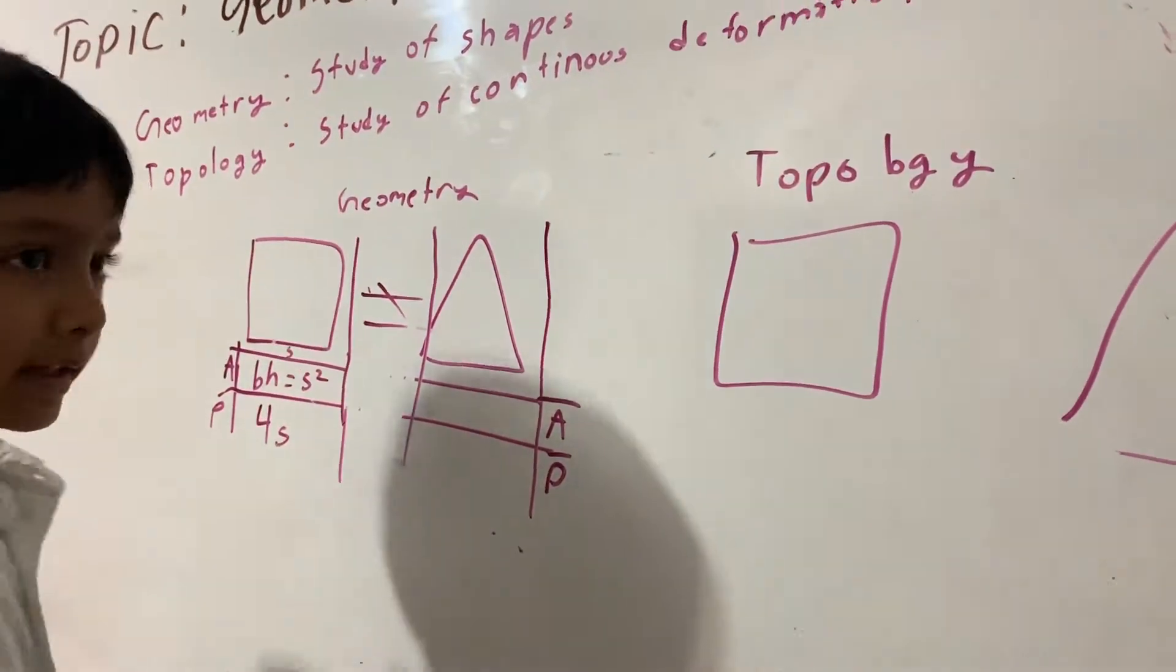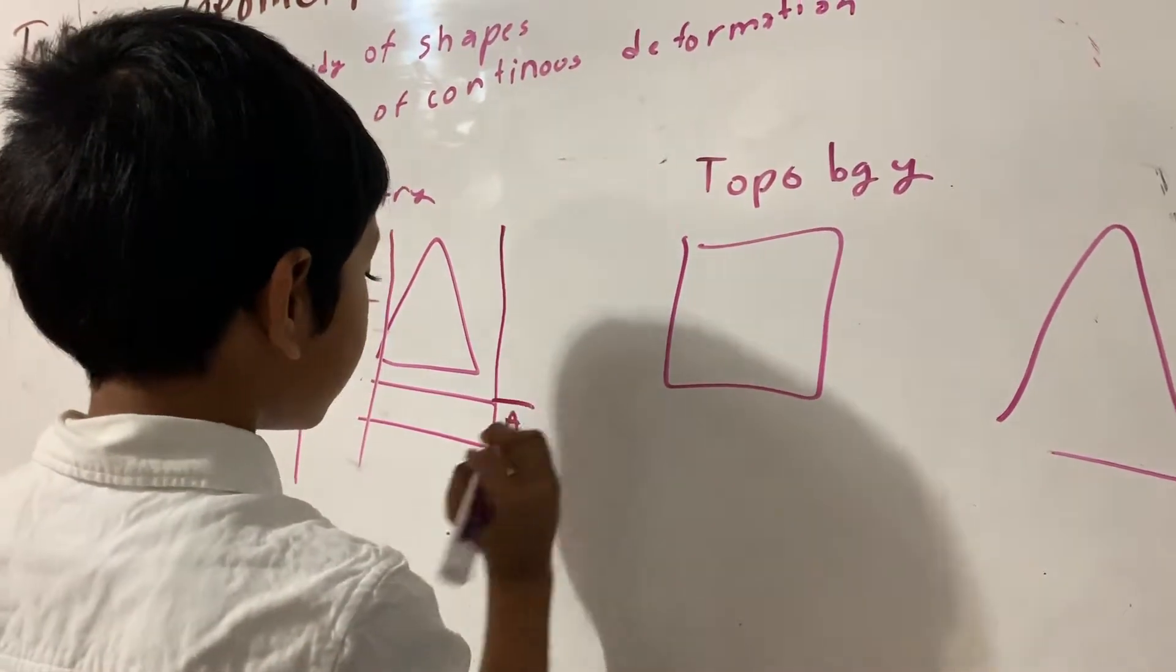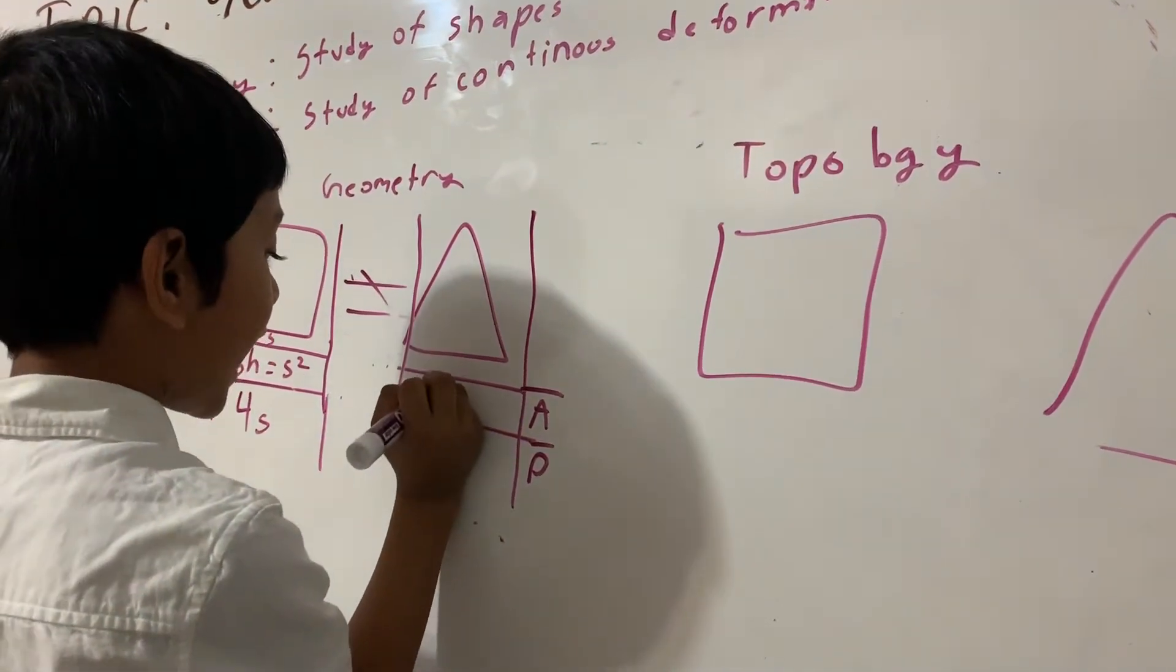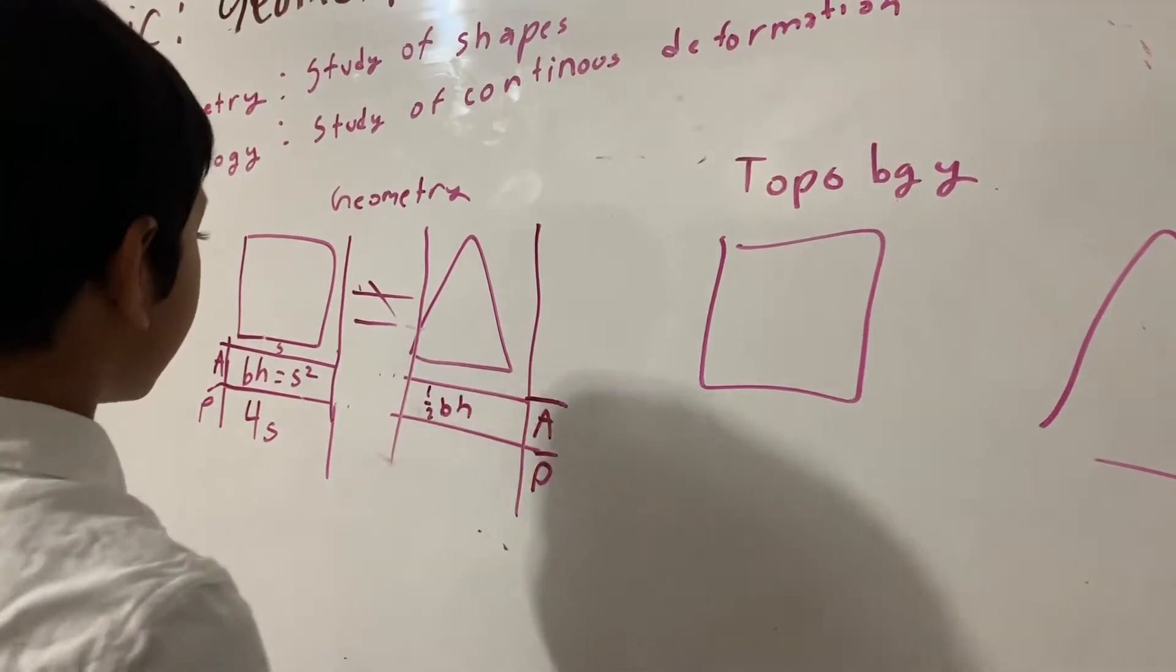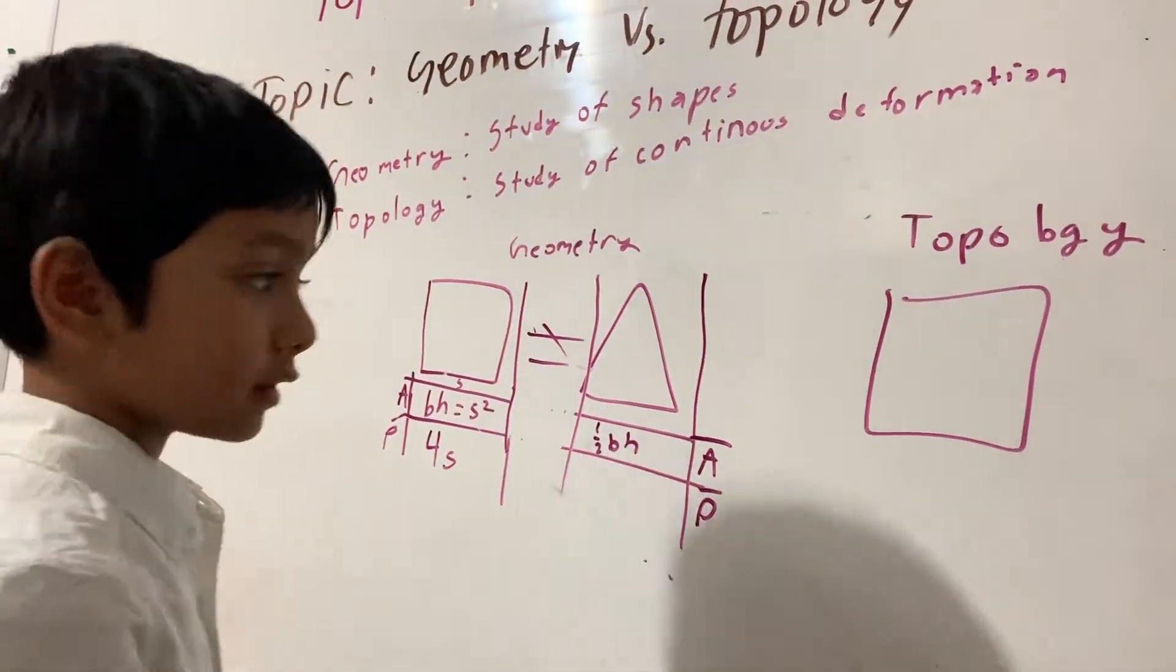So, the area of a triangle is half the base times height, obviously, because it's half of a square.